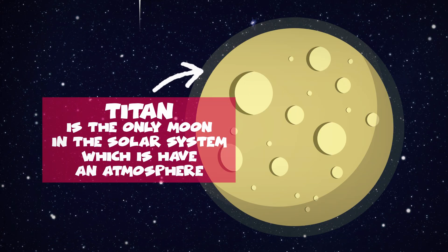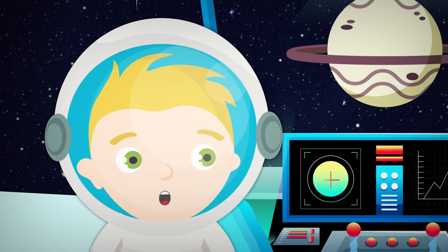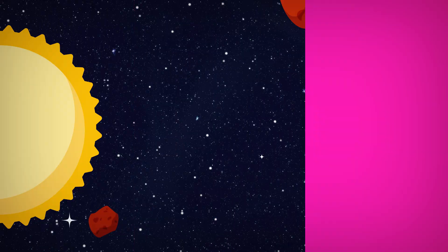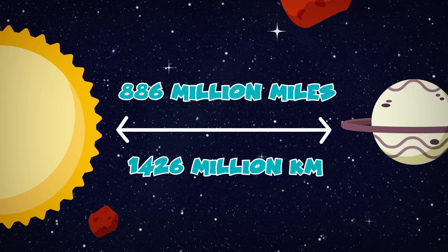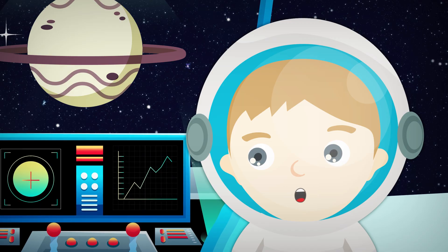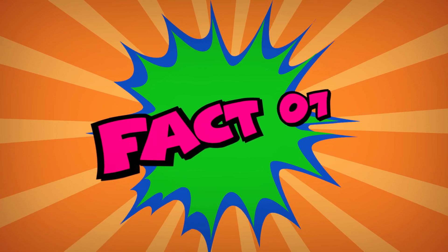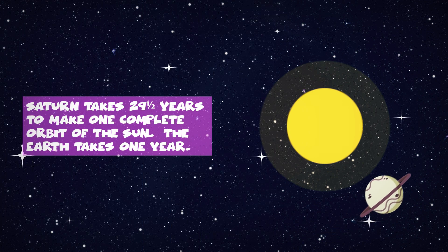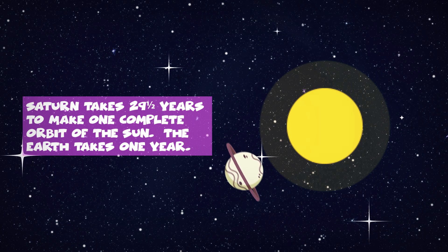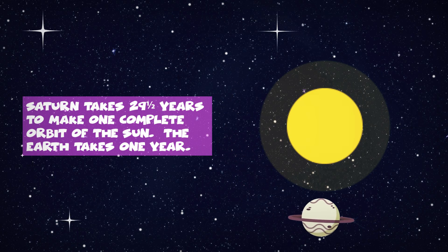Aaron, I know a fact! Fact 6. Saturn is 886 million miles or 1,426 million kilometres from the Sun. That is correct, James! Fact 7. Saturn takes 29 and a half years to make one complete orbit of the Sun. The Earth only takes one year!